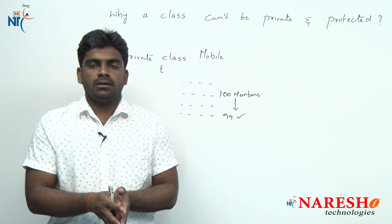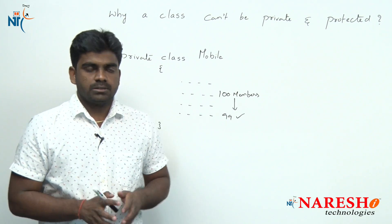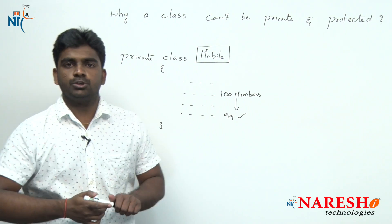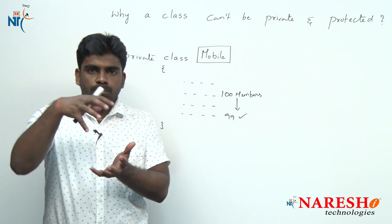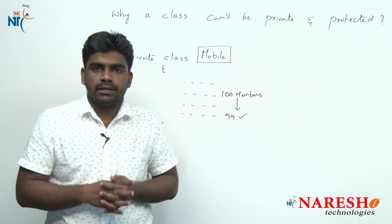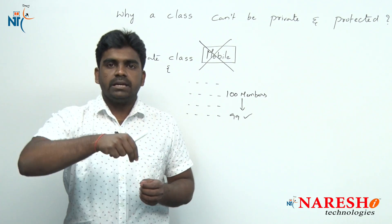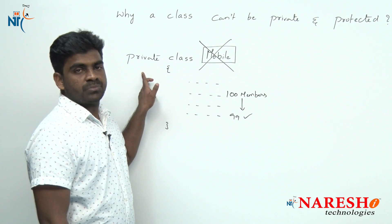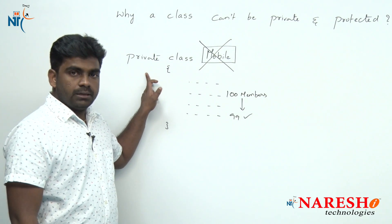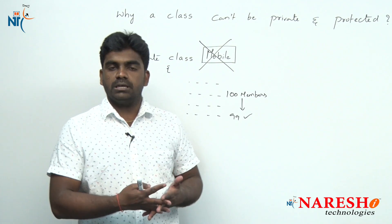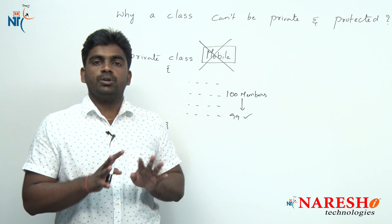If everything is in an invisible state, another person cannot communicate with that object. If it is not participating in the communication world, what is the use of that object? Suppose a mobile is manufactured and delivered to a showroom, but in its entire lifetime it stays inside the pack — no one is using it, no one is communicating, no one is purchasing it. Then what is the use of that mobile? No use. If an object exists, someone should communicate with it — only then is it useful to the outside world. That is why a class cannot be private; the complete object would not be visible to the communication world.